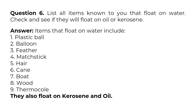Question 6: List all items known to you that float on water. Check and see if they will float on oil or kerosene. Answer: Items that float on water include 1. Plastic ball, 2. Balloon, 3. Feather, 4. Matchstick, 5. Air, 6. Cane, 7. Boat, 8. Wood, 9. Thermocol. They also float on kerosene and oil.